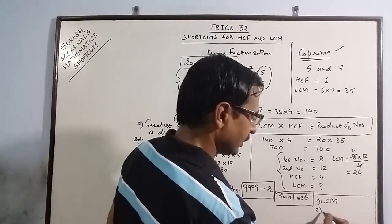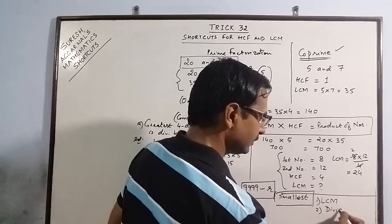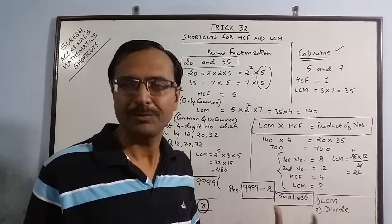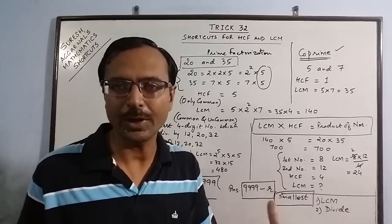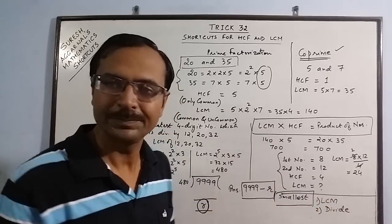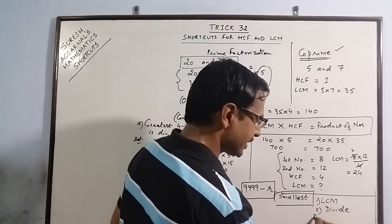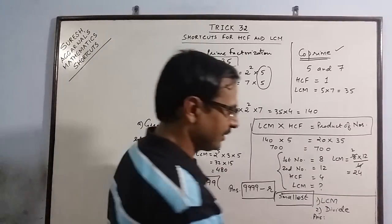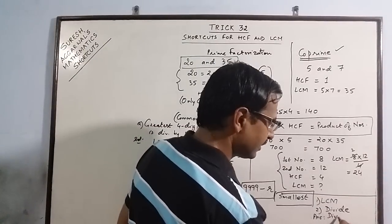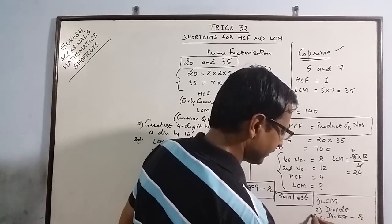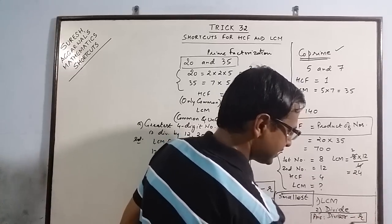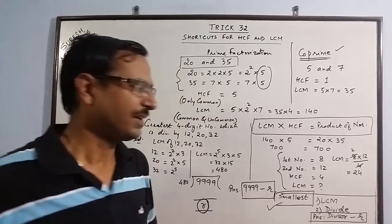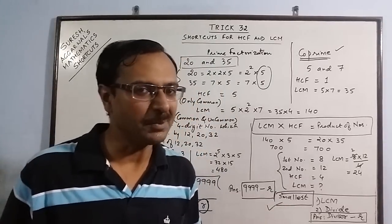Then second, divide the smallest 4 digit number or 5 digit number whichever you are asked by the LCM. And your answer is obtained by divisor minus remainder. This is your answer for smallest number. Divisor minus remainder.